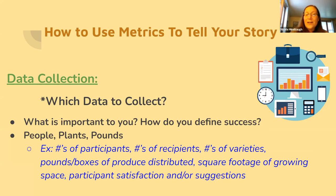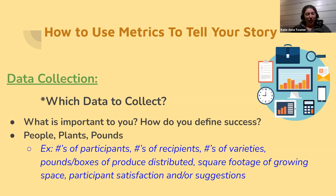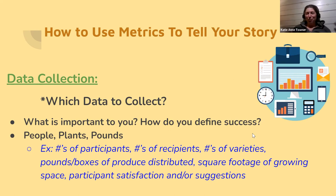Are there other things you all measure or track in your garden? One participant shares: they track a combination of pounds and plants, but when equating root vegetables and winter squash with kale, the serving size per pound is very different. Five pounds of butternut squash feeds a different number of people than five pounds of kale. One way they've addressed this is by adding a category for which part of the plant is being eaten — root, leaf, or fruit — to better equate pounds to serving size.